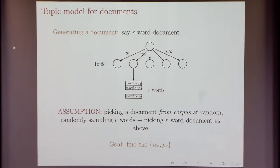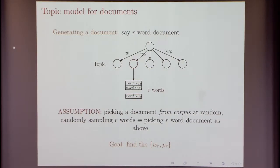The goal in this area is: assuming there is a good model for your data, how do you find the parameters — that is, the W's and the probability vectors P?